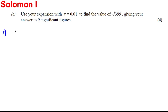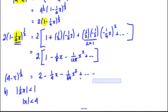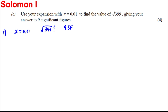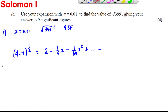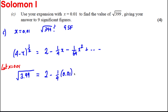For part c, let x equal 0.01. Substituting into (4 − x)^(1/2): we get (4 − 0.01)^(1/2) which equals the square root of 3.99. So the square root of 3.99 is going to be approximately equal to 2 minus (1/4)(0.01) minus (1/64)(0.01)².